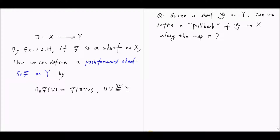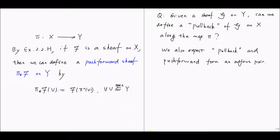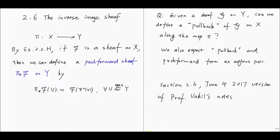Here's a natural question: given a sheaf G on Y, can we define a pullback of G on X along the map π? This new notion will be somehow dual to the push-forward sheaf, and we expect this pullback and push-forward to be an adjoint pair. This pullback will be our topic today, called the inverse image sheaf. We will first give two definitions: one by adjunction and another by direct construction.